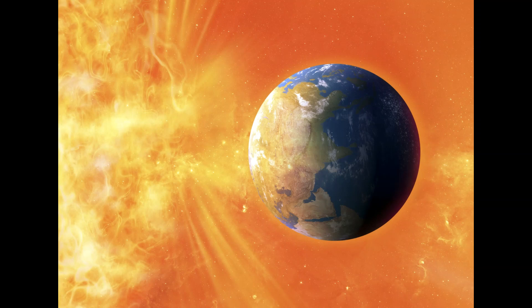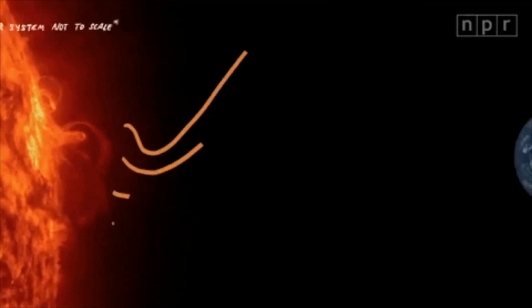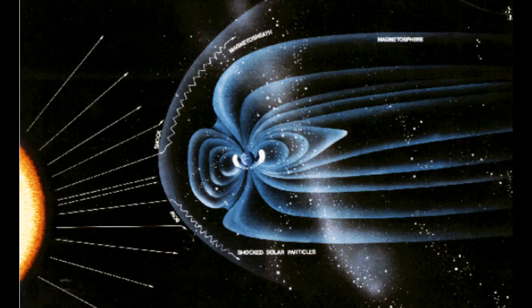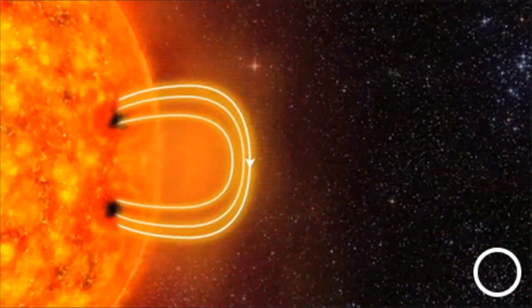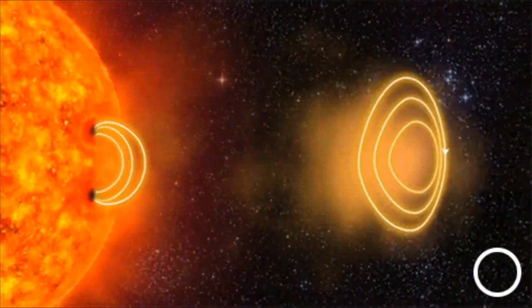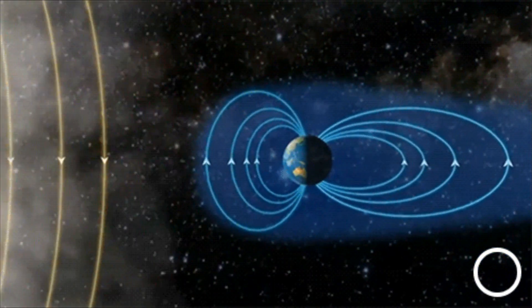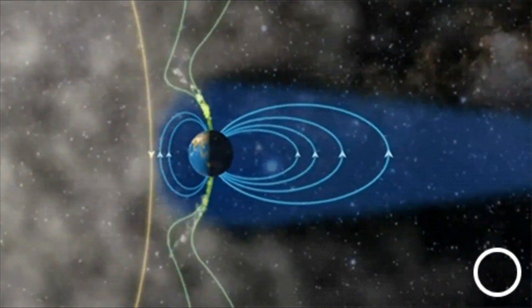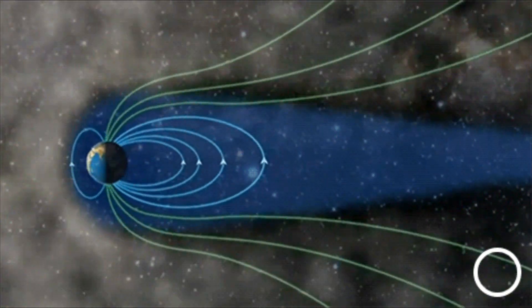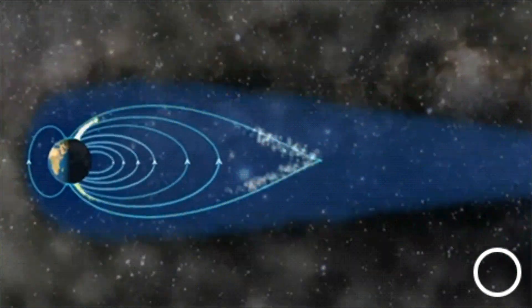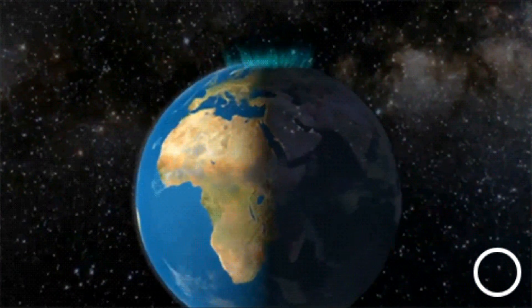The solar wind takes around 40 hours to reach earth, traveling a distance of around 93 million miles. Our earth shields against this solar wind through the magnetosphere, which deflects the solar wind by setting up a detour. During coronal mass ejection, it releases a huge amount of plasma towards the earth, and a tiny bit escapes the magnetic field and rides up and down the earth's atmosphere.